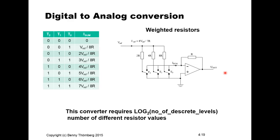This converter requires the base-2 logarithm of the number of discrete levels — meaning if you need 16 levels on the output you need 4 bits, and if you need 256 levels you need 8 bits and 8 resistors. Of course, it can be difficult to produce resistors with such large variance in resistance and integrate everything on one single chip, so this is a drawback of this design.